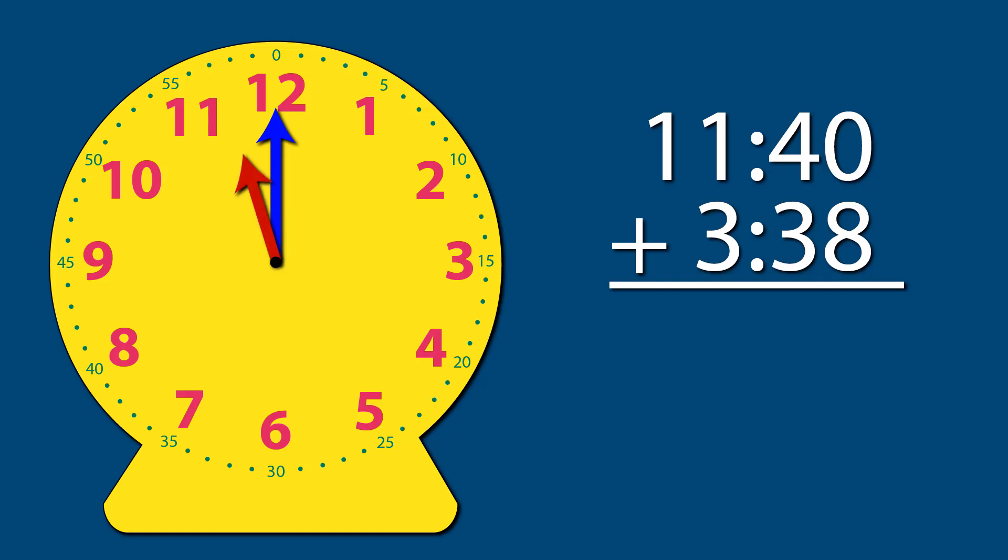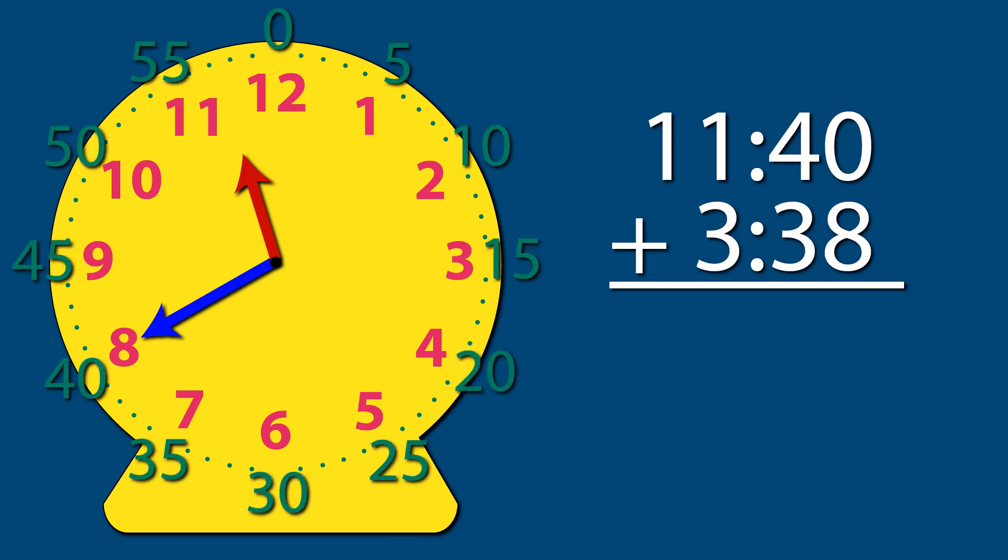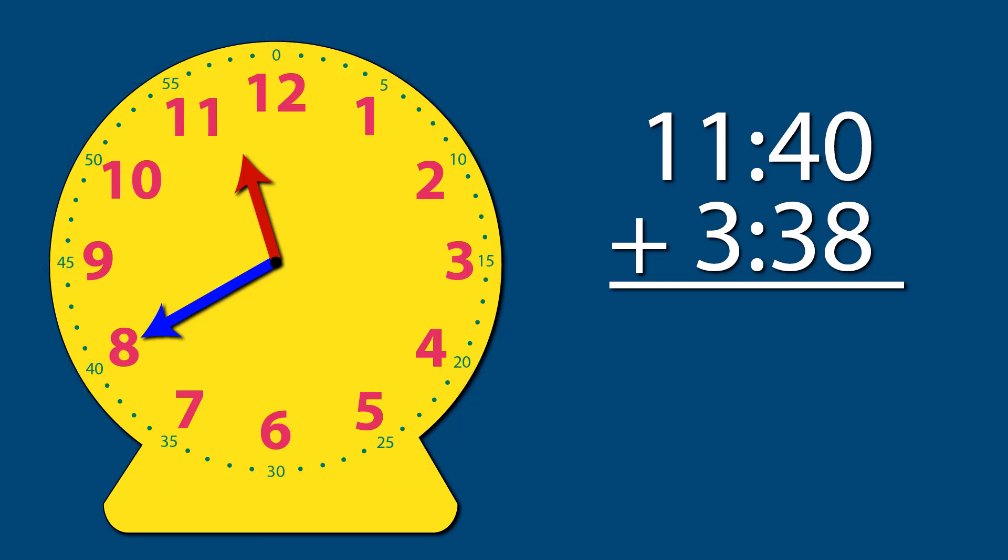The hour hand should be between 11 and 12, and the minute hand should be on the 8. This is because the 12 represents the top of the hour, and every number past 12 represents 5 minutes. So the 8 represents 40 minutes past the top of the hour. So this clock is showing 11:40.